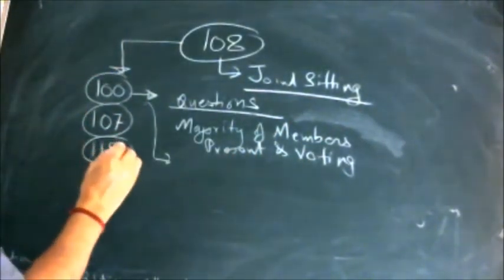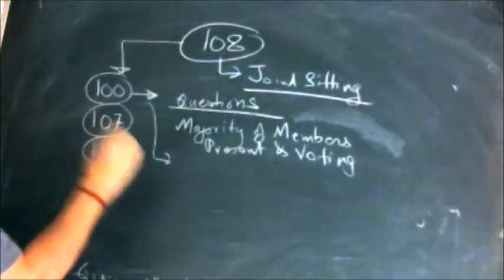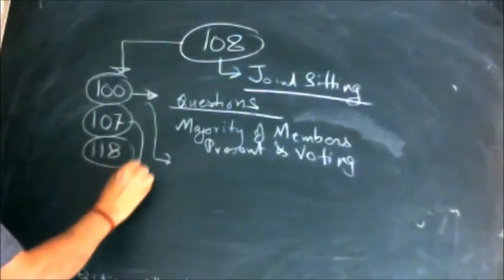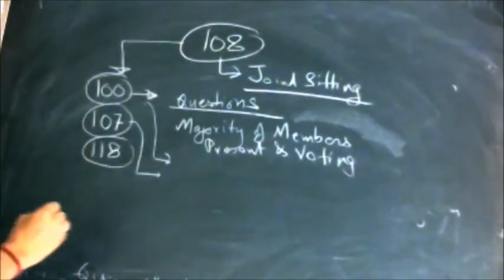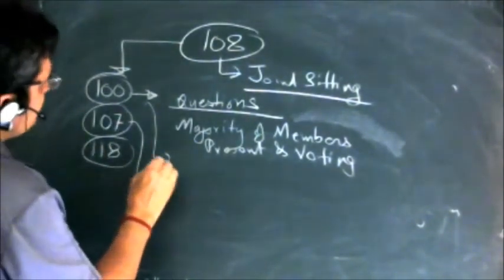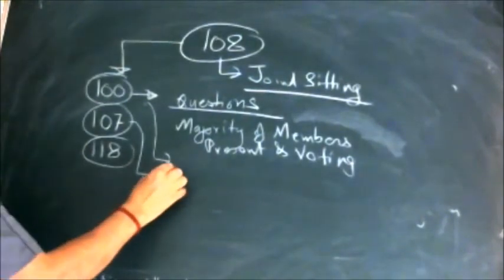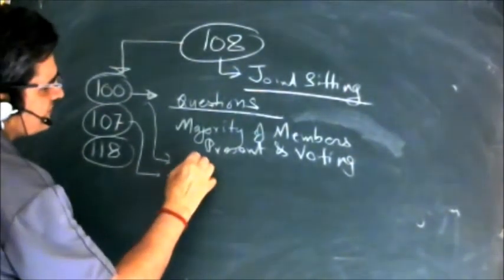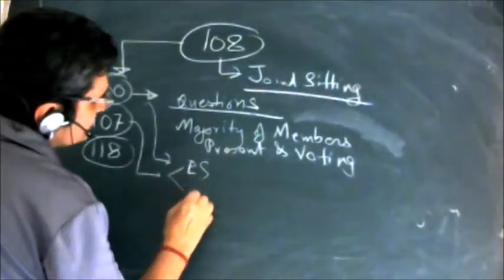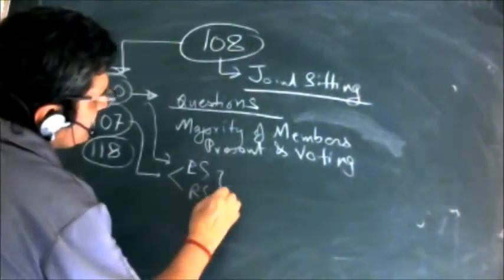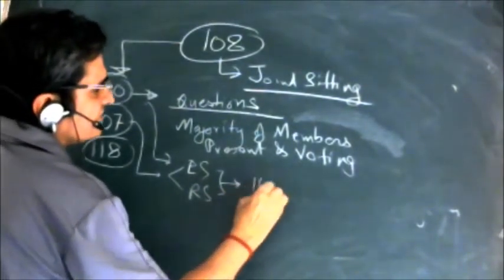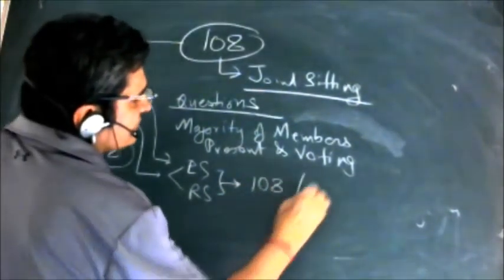Coming back to this subject, the joint sitting part is mentioned in Article 100 also. Article 107 is relevant because it says that a bill shall be deemed to be passed if it is passed by both the houses, both meaning Lok Sabha and Rajya Sabha should pass it.